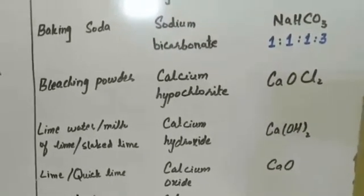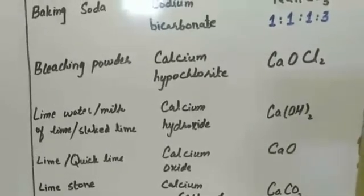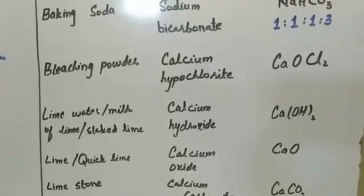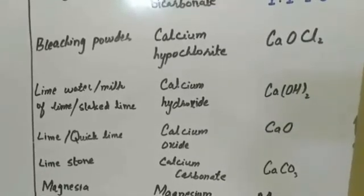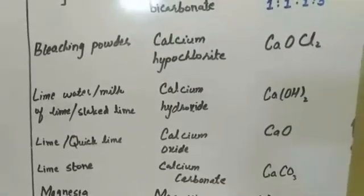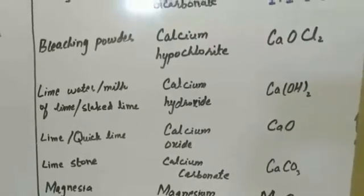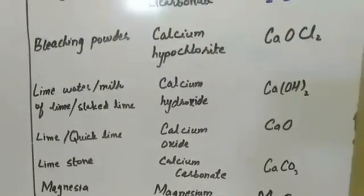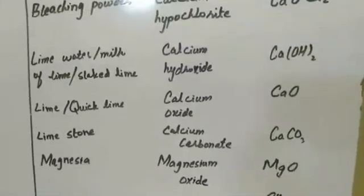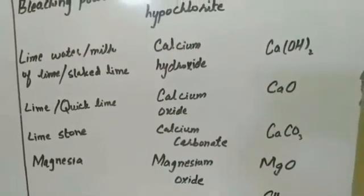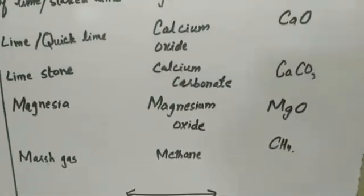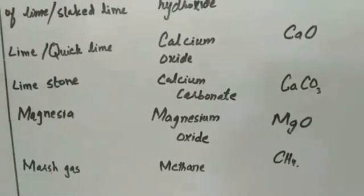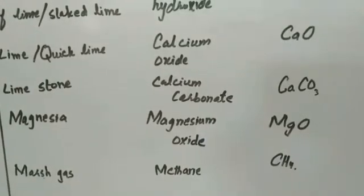Moving to compounds of calcium: bleaching powder is calcium hypochlorite, formula Ca(OCl)2. Lime water or milk of lime is also calcium hydroxide, Ca(OH)2. Quick lime is calcium oxide, CaO. Limestone, known as chunne ka pathar, is calcium carbonate, CaCO3. Magnesia is magnesium oxide, MgO. The last compound is marsh gas, commonly used for domestic purposes — it is called methane, with formula CH4.